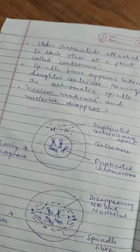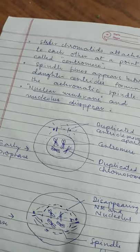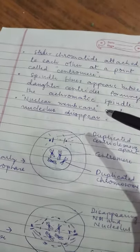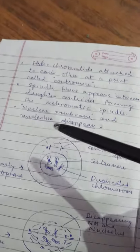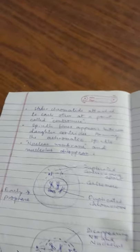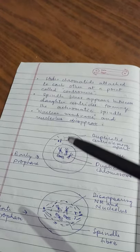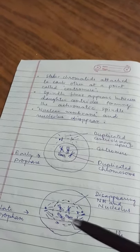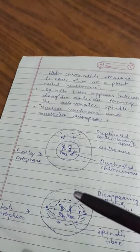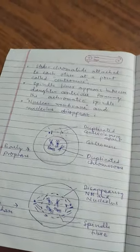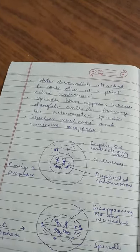The most remarkable feature of prophase, by which we can identify this phase, is the disappearance of the nuclear membrane and nucleus. To summarize prophase: chromosomes become distinct, centrioles move apart, spindle fibers appear in between the centrioles, and the nuclear membrane and nucleus disappear.